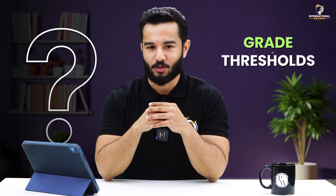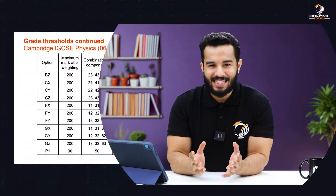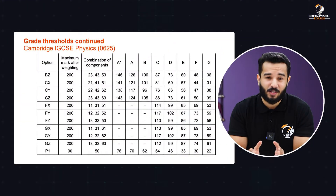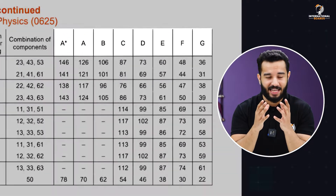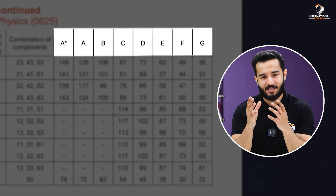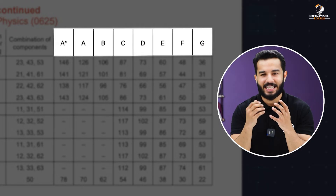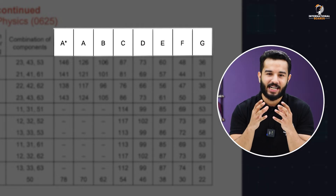But what exactly is a grade threshold? It's the minimum number of marks you need to secure a specific grade in an exam or subject. Basically, it tells whether you are going to get an A-star, A, B, C, D, or any other grade based on your raw exam score.